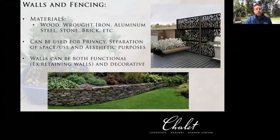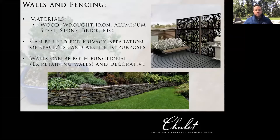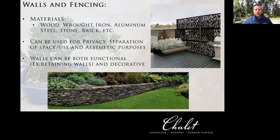Then walls and fencing — there are a lot of options. Materials include many of the same, plus wrought iron as a common element. Walls and fencing in general can serve multiple purposes: obviously for privacy and separation, but also to define spaces, not necessarily for a strict functional use, but just to create a slight feeling of enclosure or privacy. From a wall standpoint, the bottom photo is a retaining wall — physically retaining soil and compensating for grade change in a safe manner. They can also be freestanding as seat walls for sitting on, or to frame a patio space around the border.